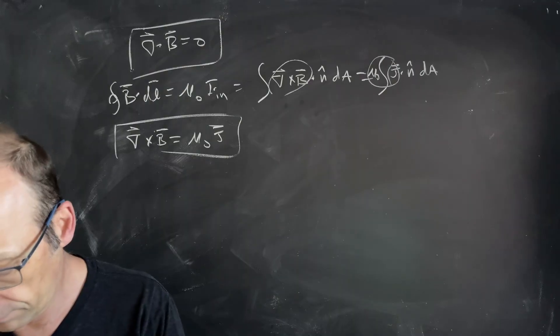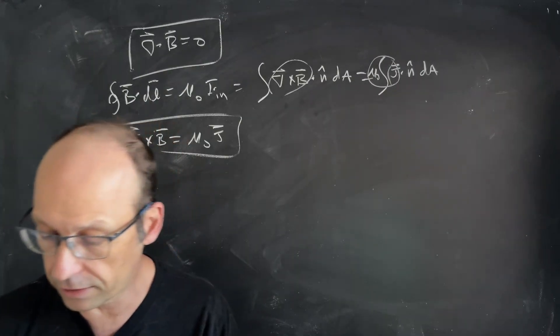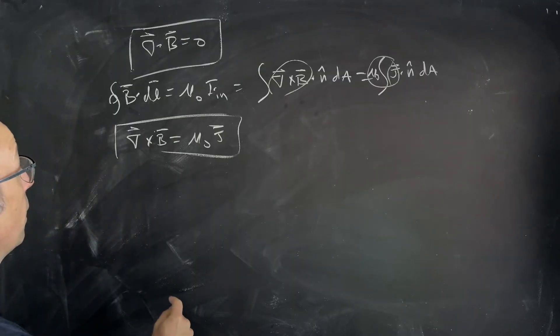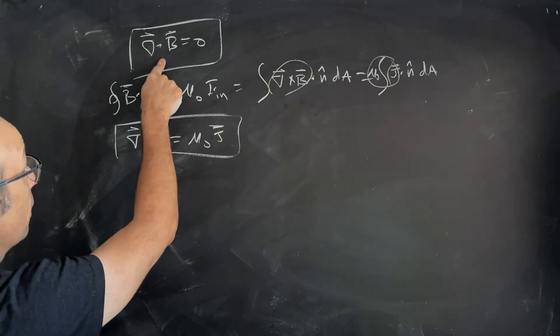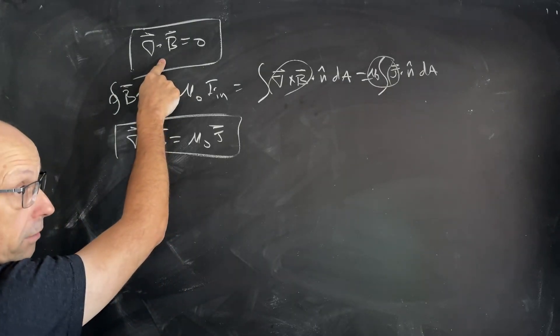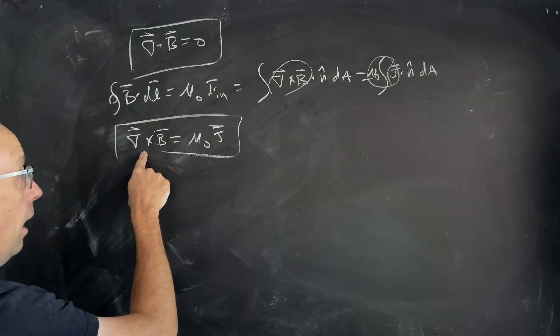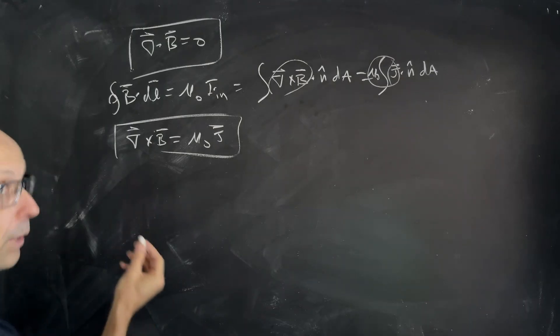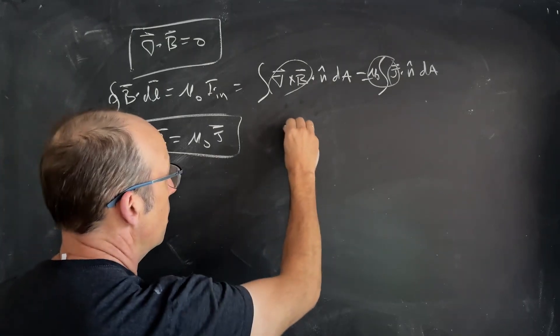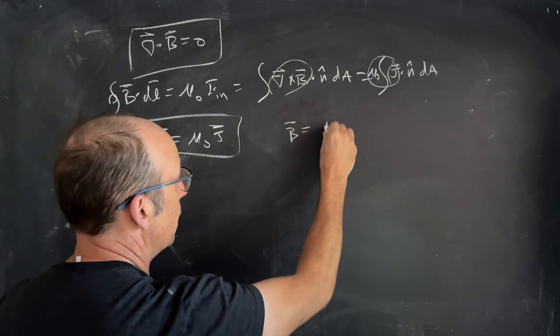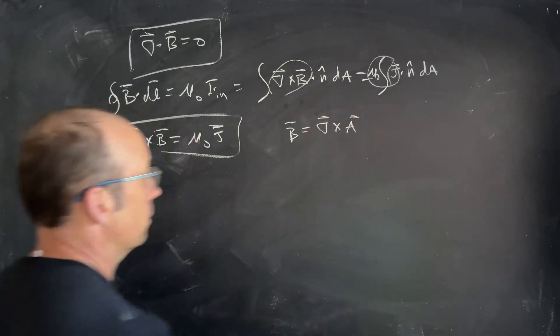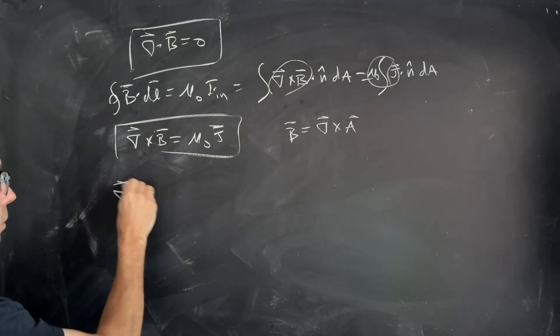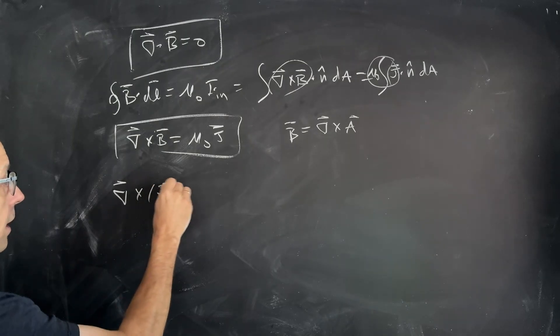I'm getting my notes because I forget stuff all the time. So, if Del dot B is zero and Del cross B is mu naught J, could we say, and we can, let's just say B is Del cross some other function A. So, if I put that in right here, I get Del cross Del cross A.